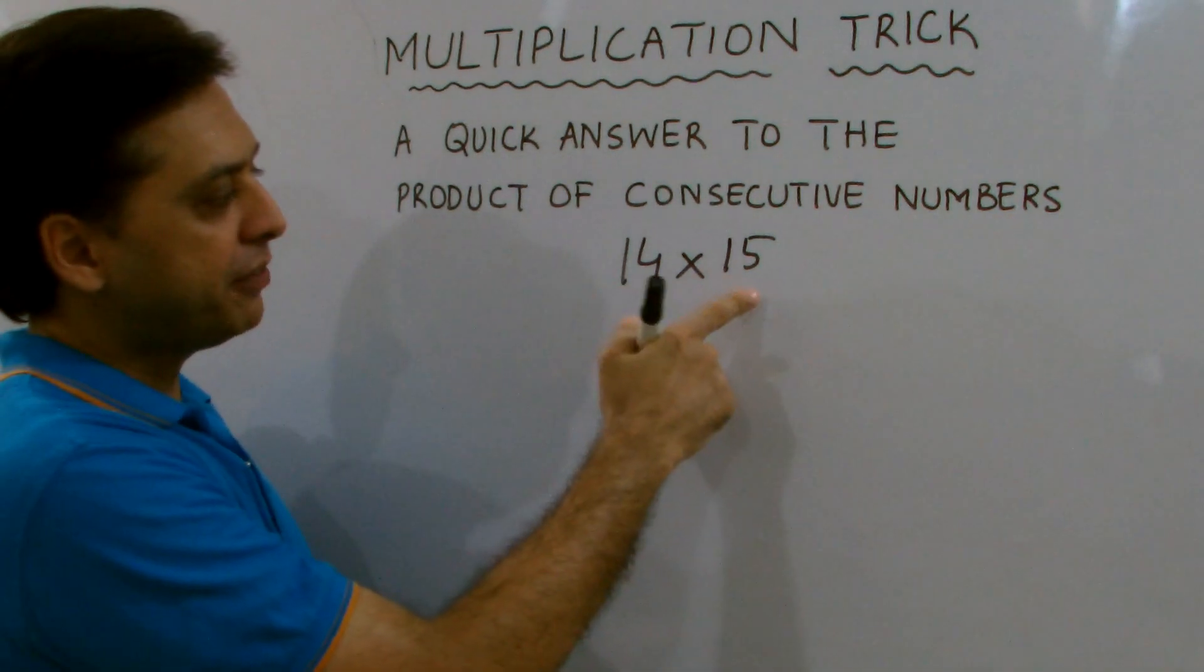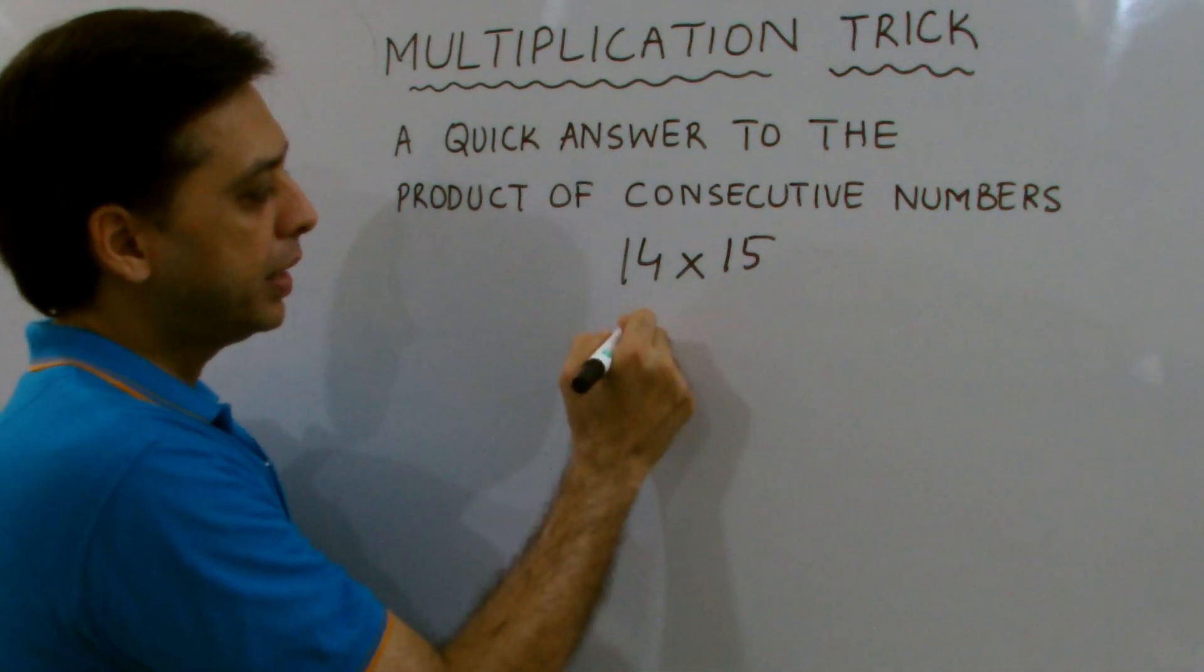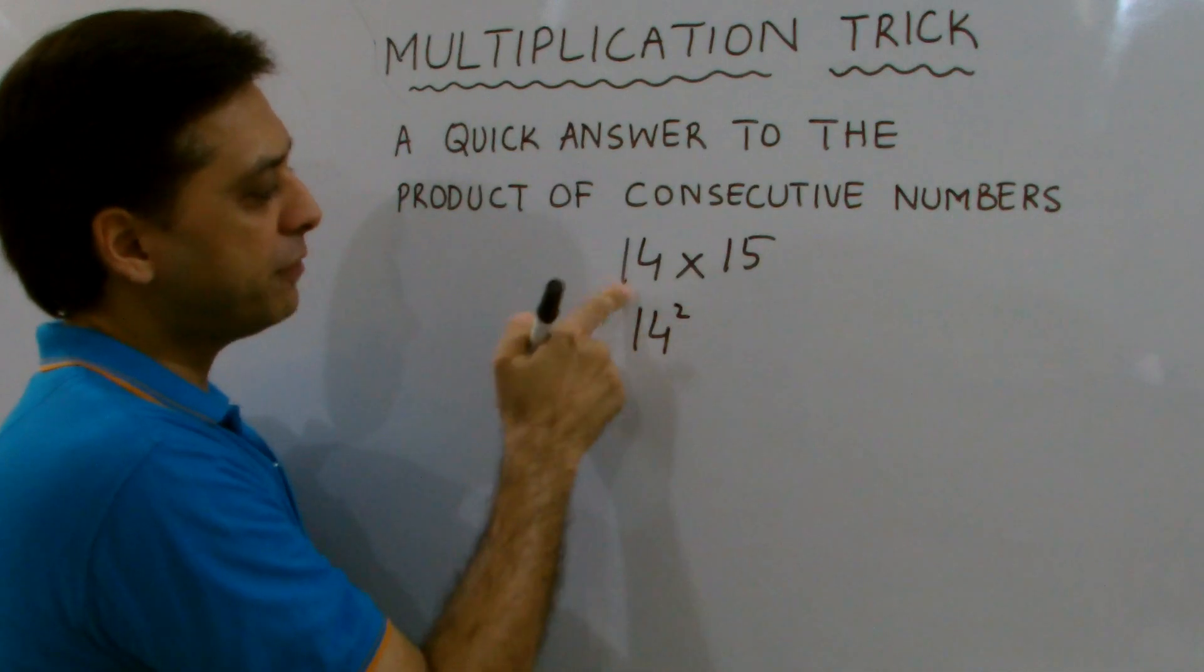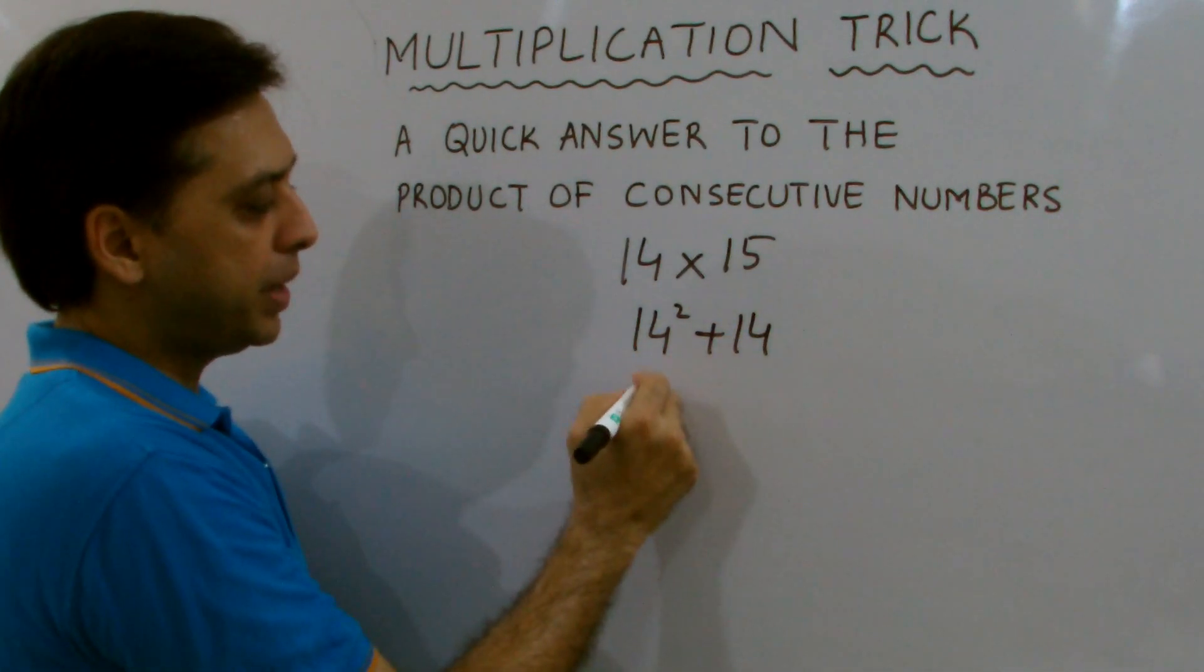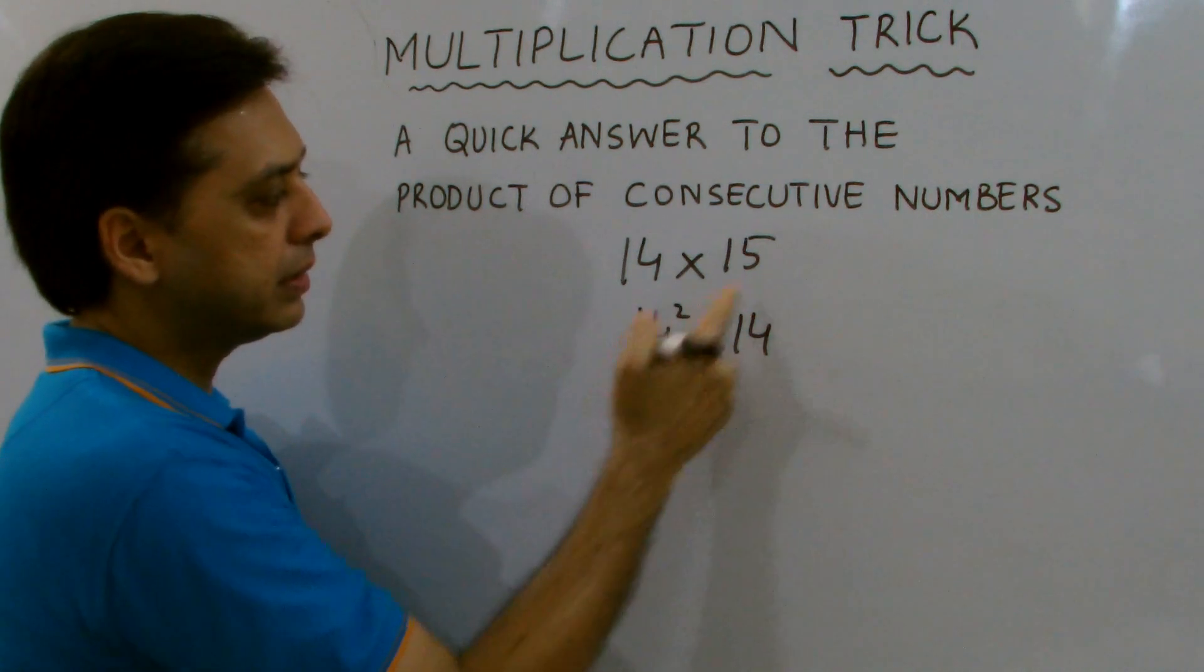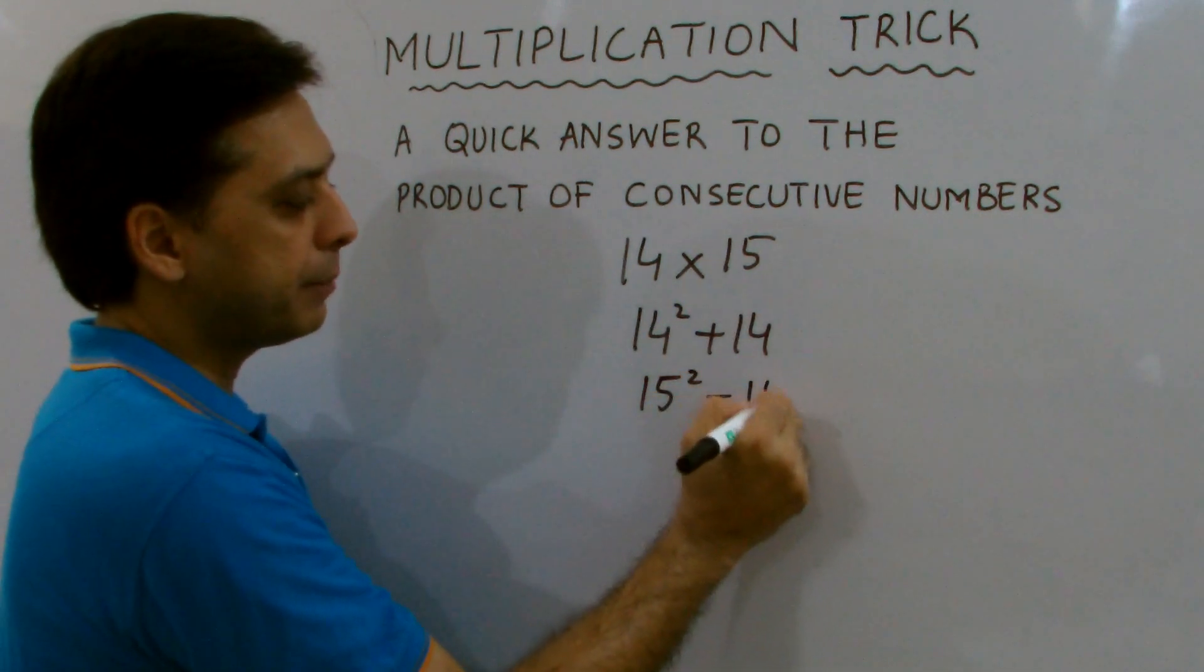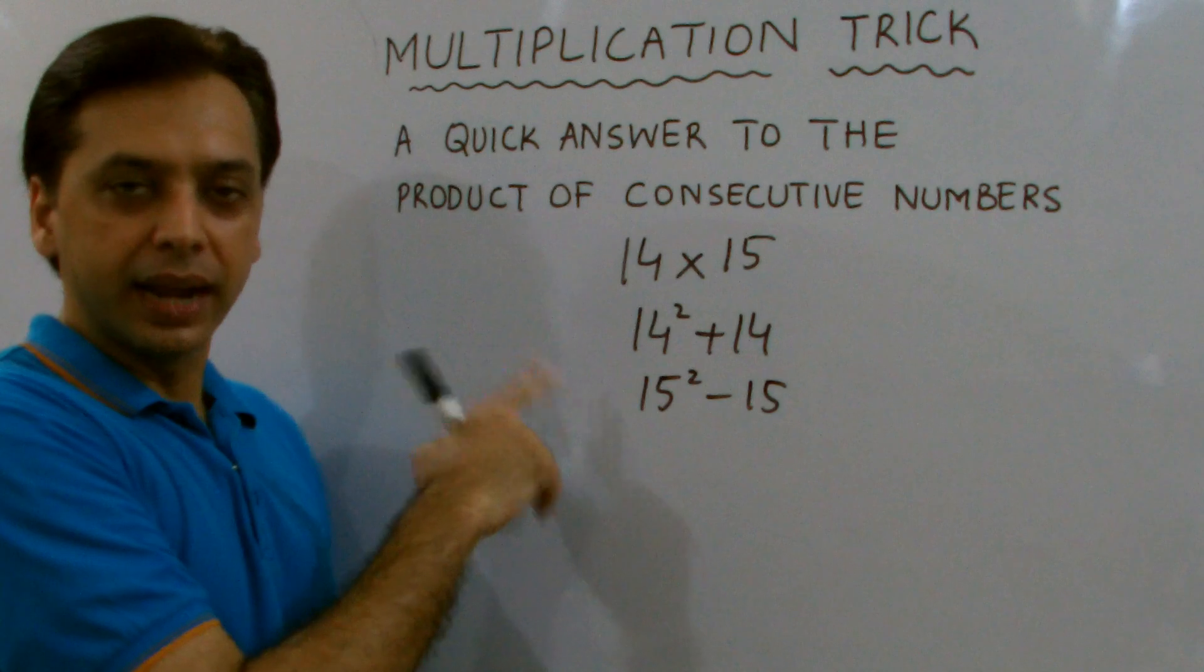Now, when I multiply 14 by 15, then according to my trick, you have to add the square of a smaller number to itself, or you can do it other way around by subtracting the bigger number from its square. In both cases, you'll get the same answer.